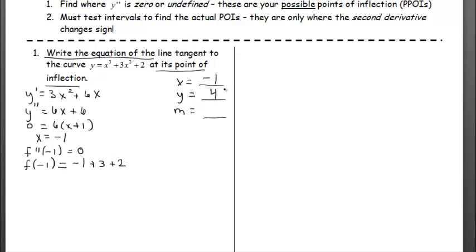I didn't need to do a second derivative number line test because it's telling me there is a point of inflection, and since I only found one value at which the second derivative is zero, I don't have to test to make sure the signs on either side of that x-value change. By default, this has to be the point of inflection.